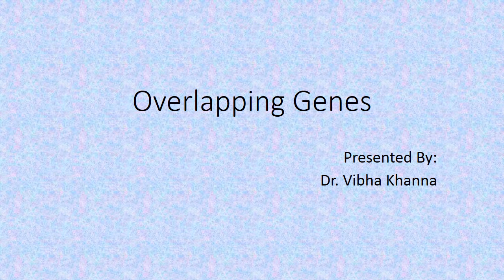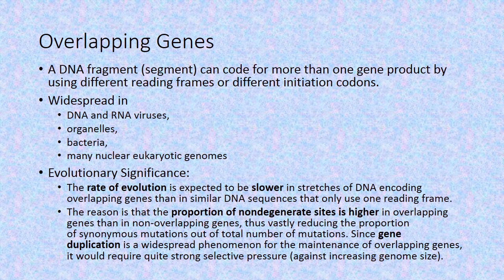According to the classical concept of gene, a gene is the sequence of nucleotides that codes for a particular protein or regulates the expression of a sequence of nucleotides that codes for a protein. But there are certain instances in which gene overlapping occurs. Note that the genetic code is always a non-overlapping triplet code — here we are talking about overlapping genes.